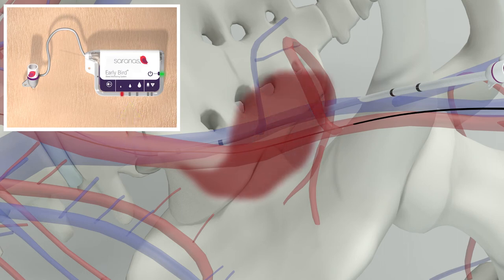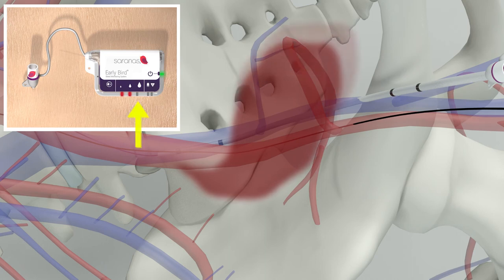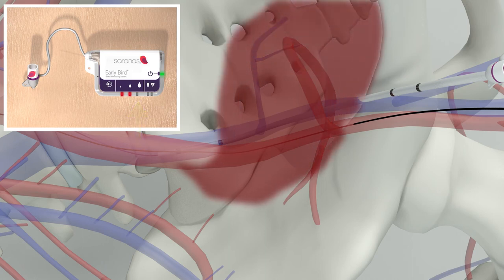Simple audible and visual indicators on the Early Bird's user interface display tell you when it's time to pay closer attention to a potential bleed and when it's time to act.